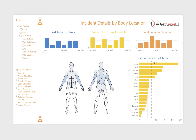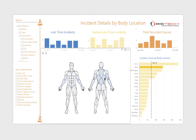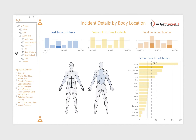The incident details dashboard focuses on the common areas of the body that have been injured. Selecting any element of the body will highlight all the other metrics in the dashboard, enabling key metrics to be viewed by the injured body part. Each element in the dashboard can then also be filtered by region and injury mechanism.